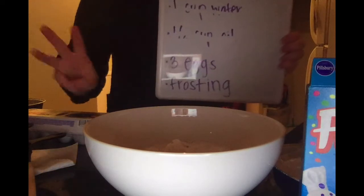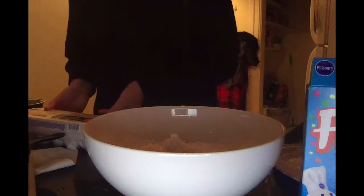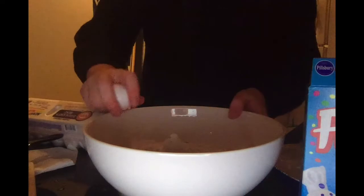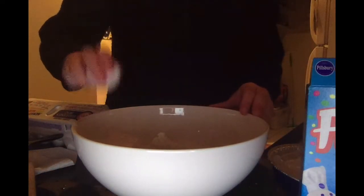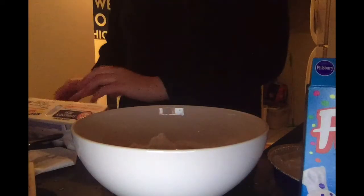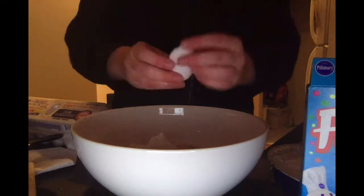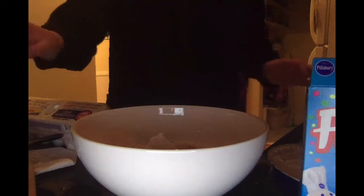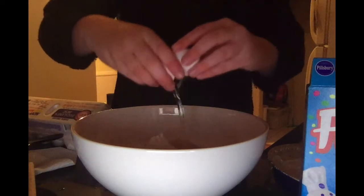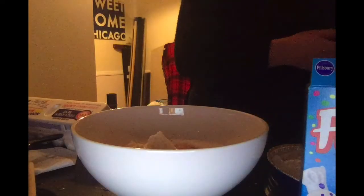We can cross that off our list. Next it says to add three eggs, so let's crack them into the bowl. Cracking eggs is a little tricky — so we have one, two. You want to make sure the shell doesn't get in there, otherwise it makes it a little crunchy.